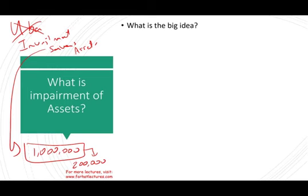The assets for Uber were impaired — it means they lost utility. How do we measure impairment exactly? I'm giving you this example to give you the big picture. You made an investment in your property, plant, and equipment, and for some reason — one of them being legal reasons — those property, plant, and equipment became less useful. They're not giving you the same utility you thought you'd generate from them.